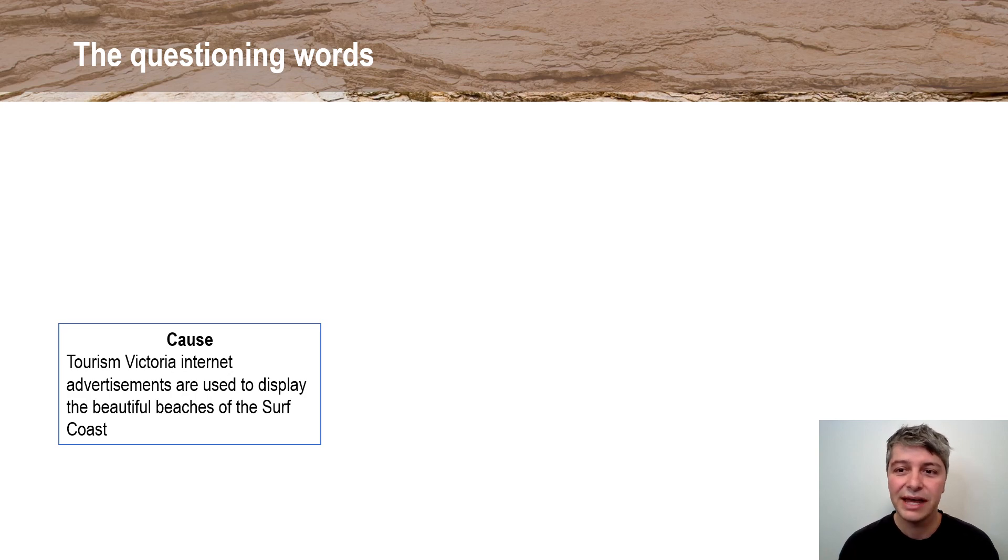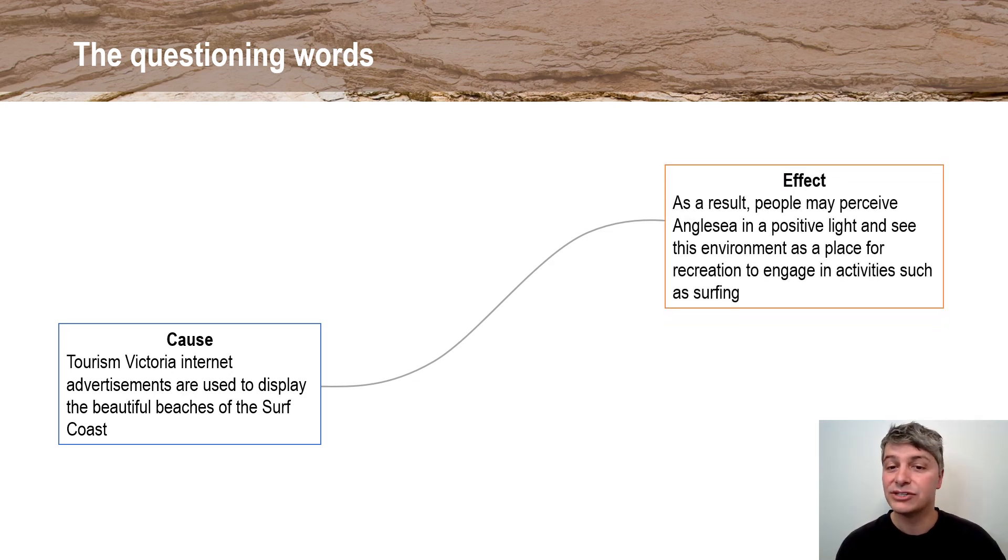If we go on to another example, so I'll unpack another one. And this might be around those unit three area study two factors that influence relationships. So here it could be depictions and portrayals in the media. And you could talk about a Tourism Victoria internet advertisement. It might be something that people see when they're scrolling through Instagram, for example, and it might be about advertising how beautiful the beaches are of the surf coast. You could talk about how that's going to have a positive effect on relationships. And as a result, people might perceive a place like Anglesea in a positive light, see it as a place for recreation and engage in activities such as surfing. Again, using that little conjunction is what we would call them. But it's just a signpost to the examiner to say, hey, I know that you're looking for cause and effect.